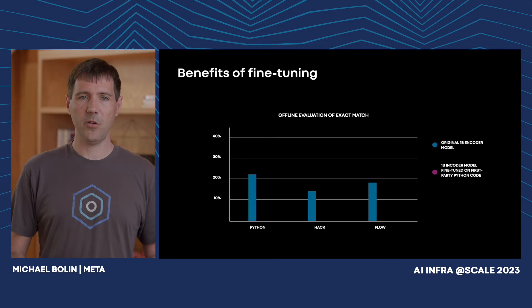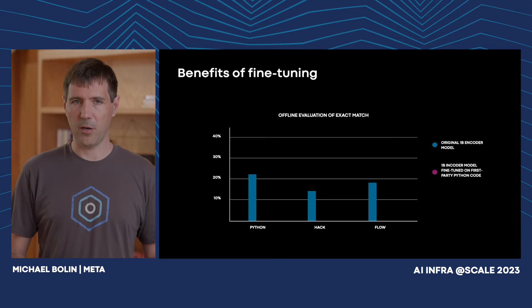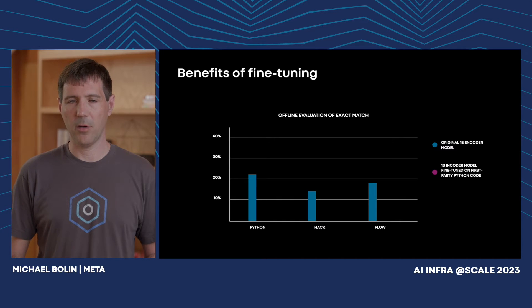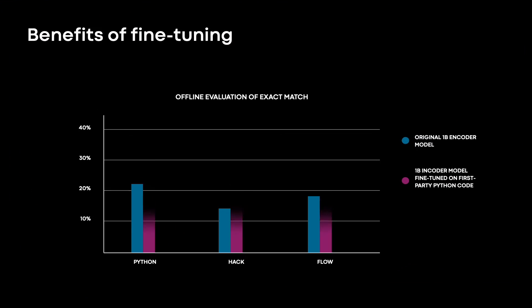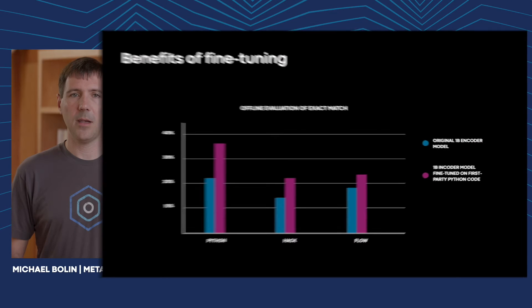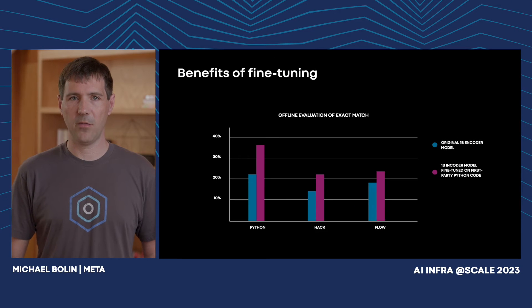Next, we took the original 1.3 billion encoder model and fine-tuned it exclusively on first-party Python code and re-ran the infilling analysis. As expected, this improved the exact match for Python in our experiment, jumping from 23% to 36%. An unexpected result was how fine-tuning on Python also improved the scores for Hack and Flow, illustrating the potential benefits of transfer learning in large language models.